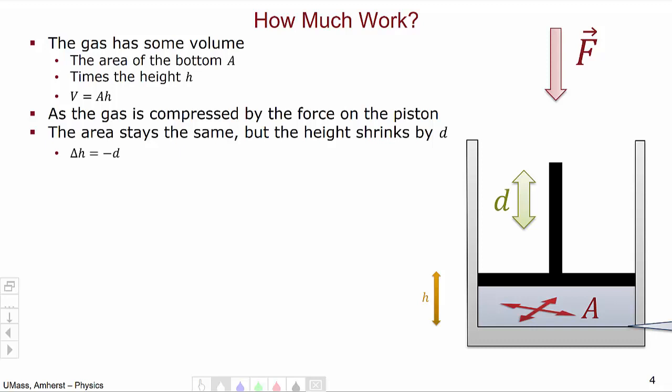So, we can say the change in height is equal to negative d, where we have this negative sign because the height is getting smaller as the distance is getting larger. The change in volume of the gas is then A, the area which doesn't change, times the change in height, or minus A times d.